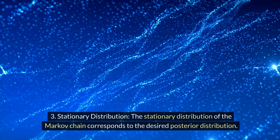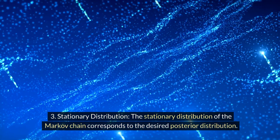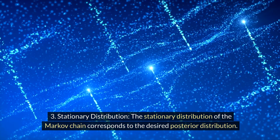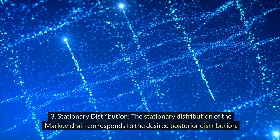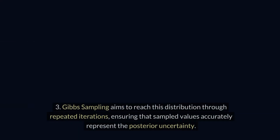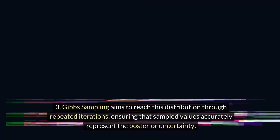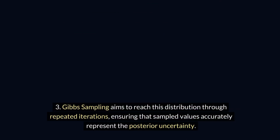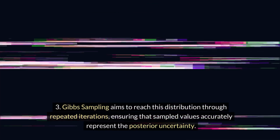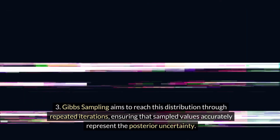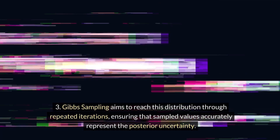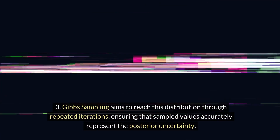Stationary distribution: the stationary distribution of the Markov chain corresponds to the desired posterior distribution. Gibbs sampling aims to reach this distribution through repeated iterations, ensuring that sampled values accurately represent the posterior uncertainty.